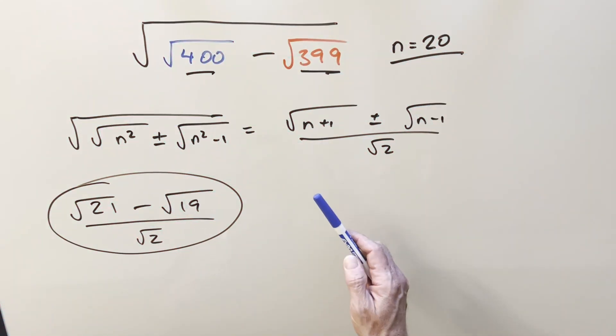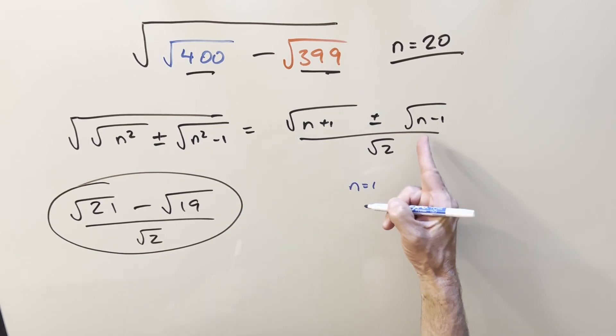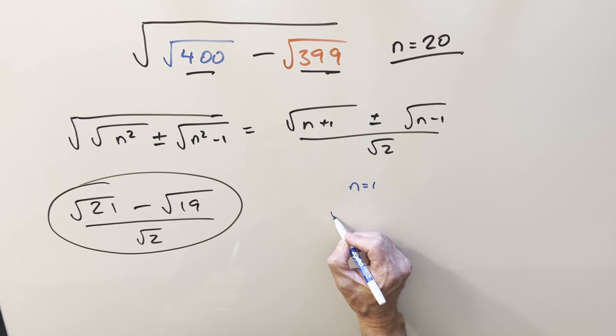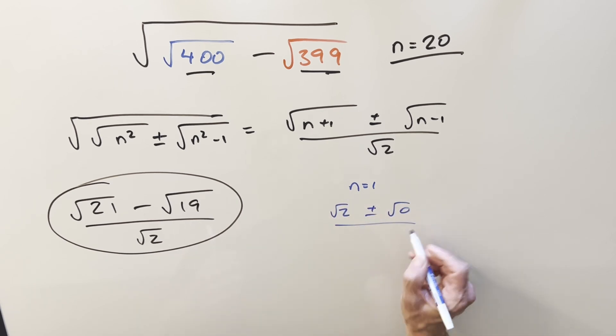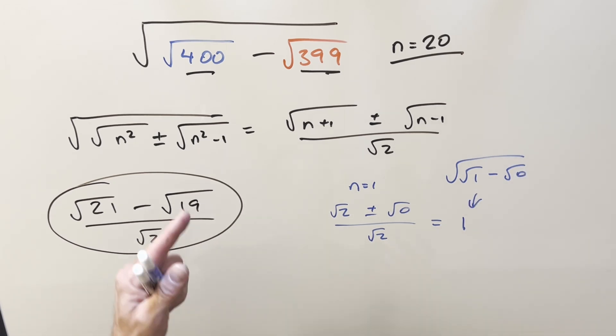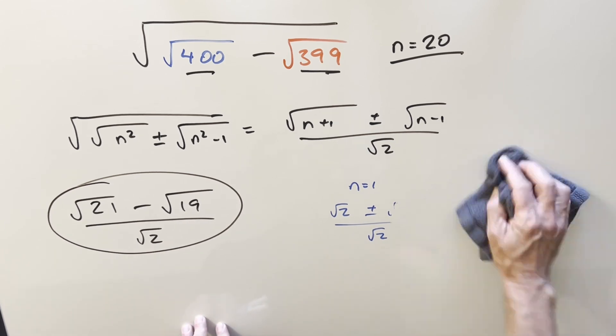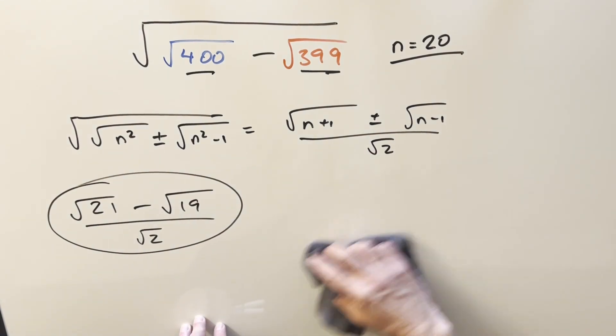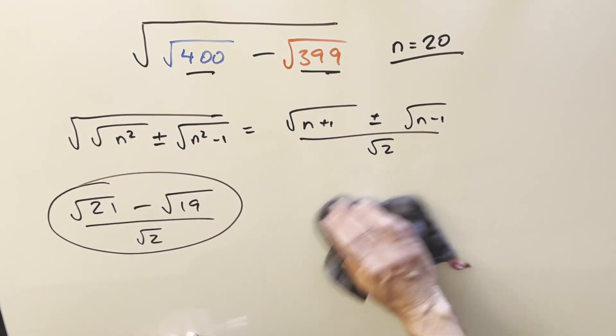Thinking about it a little more carefully, I think n equals one actually would work. Because if you had n equals one, that's going to be zero over there. So you end up with square root of two over square root of two. And that's going to be one, which makes sense. But you do need a positive integer because if n was zero, then you've got a real mess because it becomes complex when you get a minus one there.